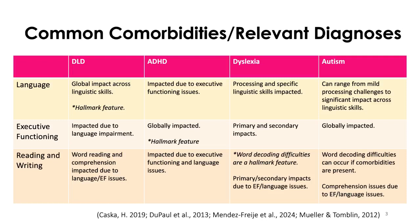With autism, there are social executive functioning issues where reading social situations and situational awareness will have to be taught directly. You'll probably need to address it with DLD as well, but the approach is a little different with autism. Autistic people can also present with reading difficulties because of comorbidities, and the language issues can impact their reading ability as well.